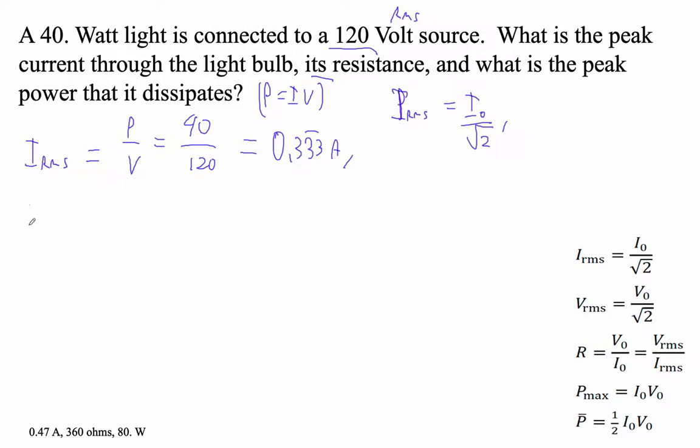So I peak is equal to the square root of 2 times 0.333. So I'm going to go times the square root of 2. And I get the first answer here, 0.4714 amps.